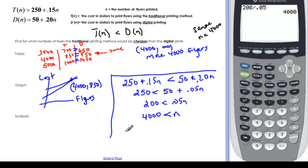So you would of course want to write a sentence here. So you say that 4,001 flyers or more must be printed for the t of n, we don't know it by any other name, to be cheaper. Take care!